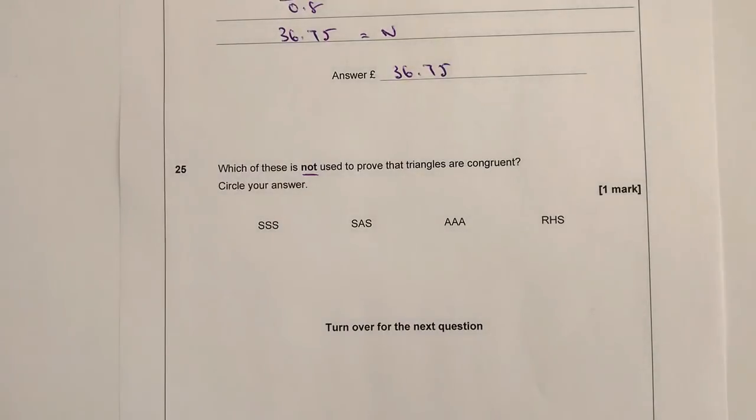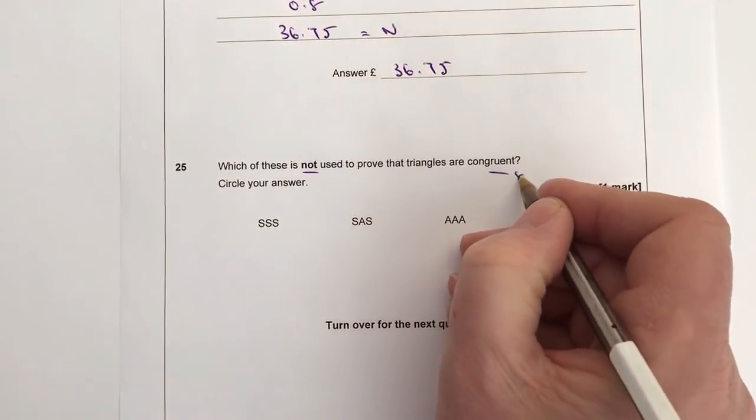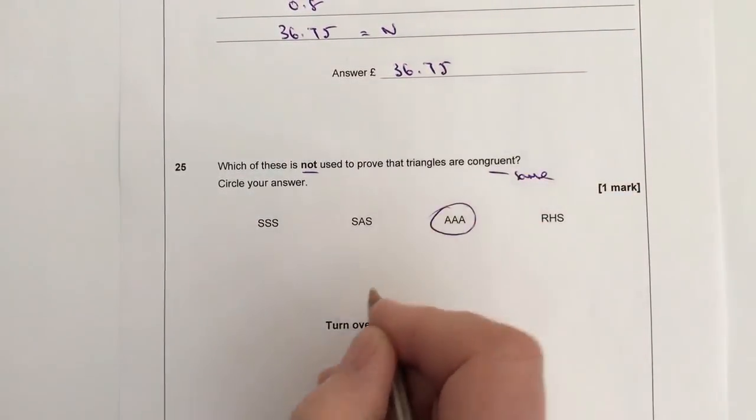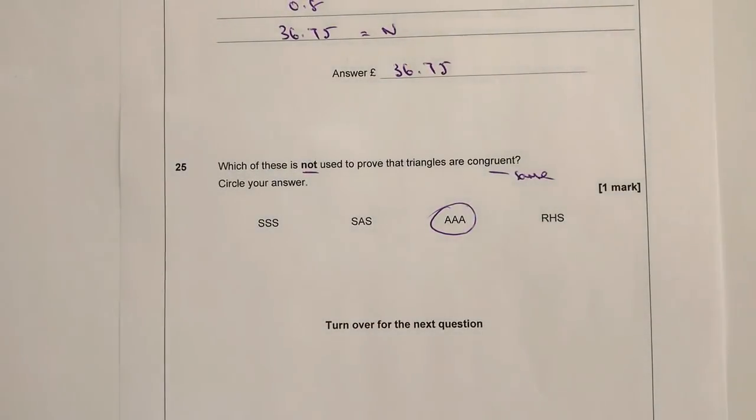Which of these is not used to prove that triangles are congruent? So it's that word again, congruency—we had it at the beginning of the paper—just basically means the triangles are the same. Well, it's area, it's angle, angle, and angle. The reason being is that you could have, let's say, a triangle like that which has three angles in it.